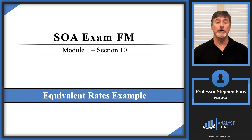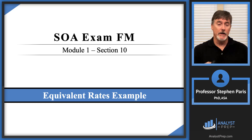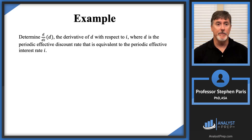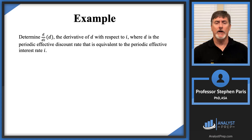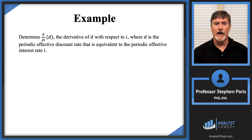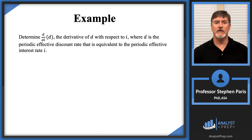In this video, we're going to do an example on equivalent rates. We're asked to determine the derivative of D with respect to I, where D is the periodic effective discount rate that is equivalent to the periodic effective interest rate I.